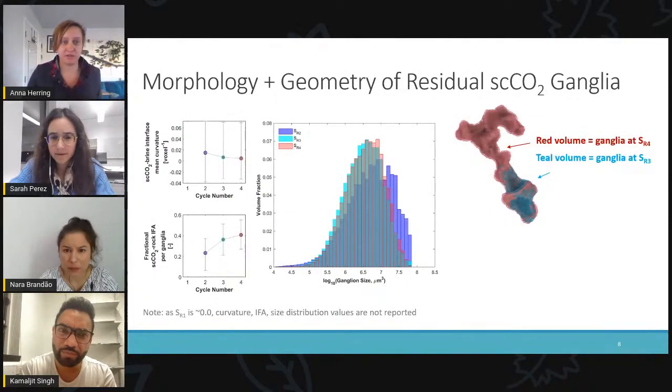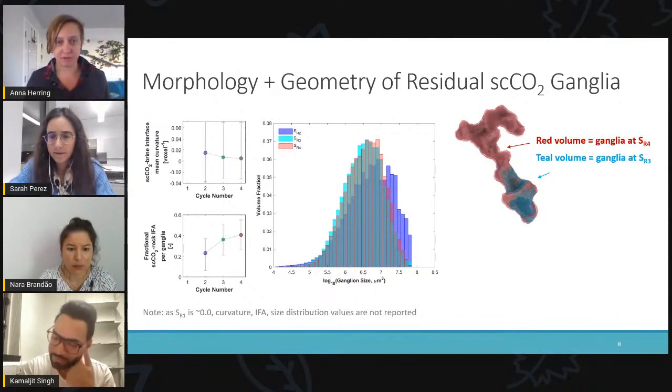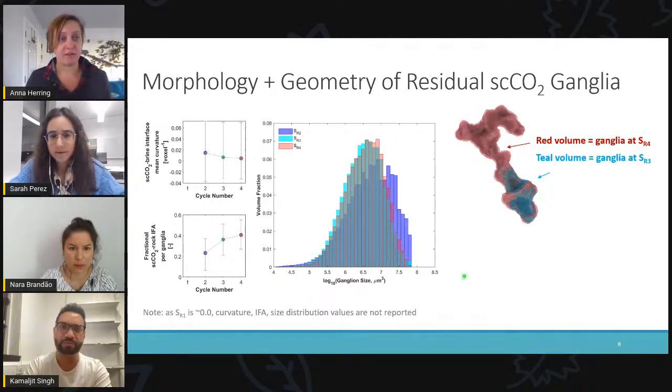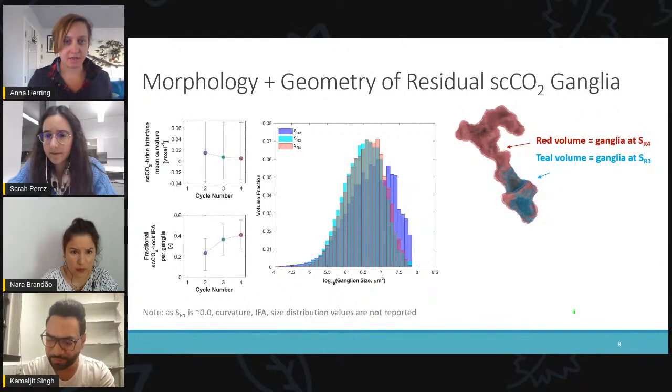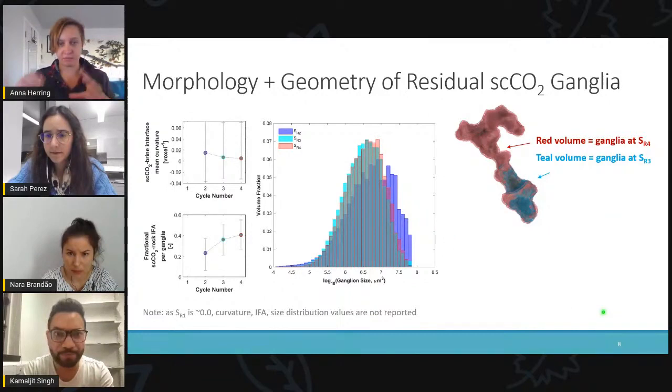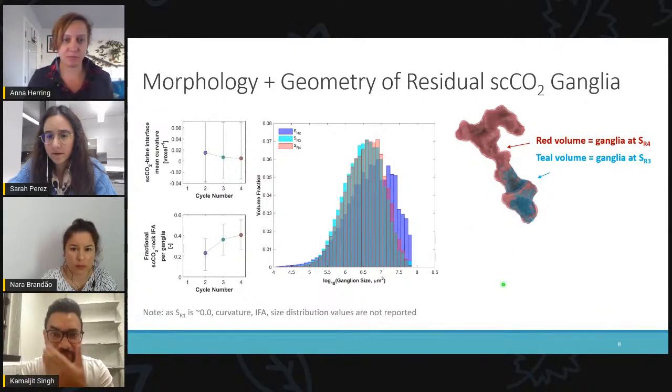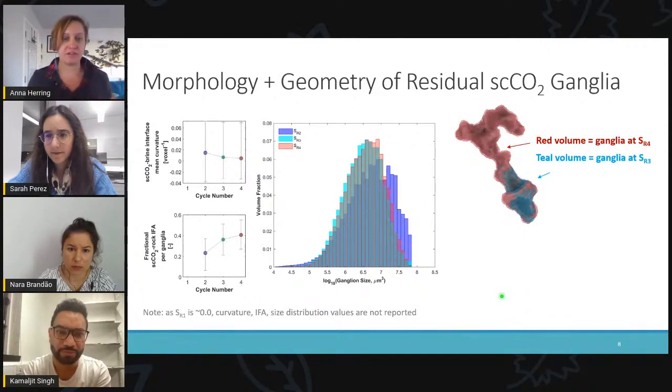Looking at individual ganglia, we observed that the mean curvature of the fluid-fluid interface decreases as we undergo more cycles. So that indicates that on average, the trapped bubbles are existing at lower capillary pressures. We also observed that if you look at the total interfacial area of the CO2 ganglia, the fraction of that area that is made up of rock to CO2 area increases. In terms of size distribution, we have relatively large ganglia after the second cycle, and that shifts to slightly smaller sizes for the third and fourth cycles. I also have this visualization of residual ganglia comparing what that ganglion looks like in this one specific location after the third cycle compared to after the fourth cycle.